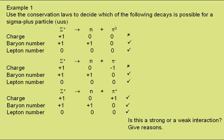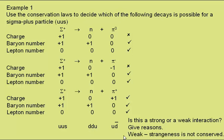We're then asked: is this a strong or a weak interaction, with reasons? Well, if we write down the quark composition, we're told the sigma plus is up, up, strange. The neutron — we're expected to remember — is down, down, up. And the pi plus — we're expected to remember — is up, anti-down. So the sigma plus has a strangeness of minus one, and the neutron and pi plus have zero strangeness. Therefore it must be a weak interaction, as strangeness is not conserved.